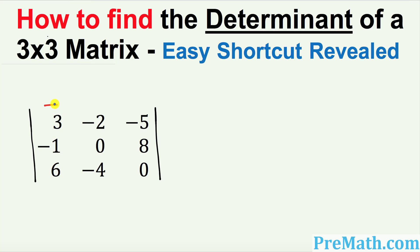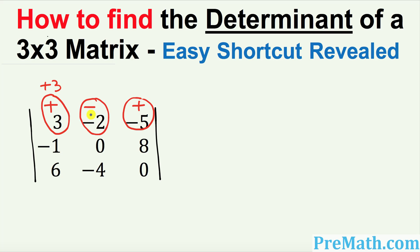You must always do that. Now let's go ahead and multiply these signs with the numbers on the top row. Positive times positive 3 stays positive 3, negative times negative becomes positive 2, and positive times negative becomes negative 5. So our new top row has become positive 3, positive 2, and negative 5. Just ignore the original numbers now.